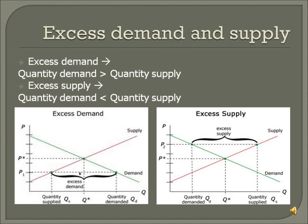Excess Demand is when the market demand for a product exceeds its market supply, so there is upward pressure on its market price. Excess Supply is when the market supply for a product exceeds its market demand, so there is downward pressure on its market price.